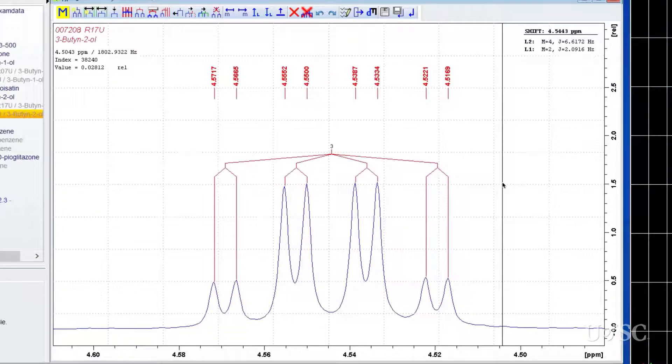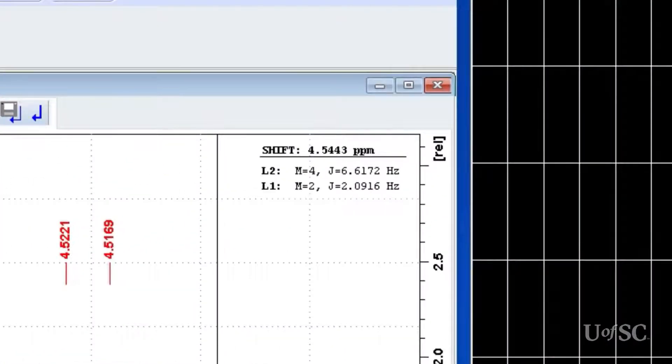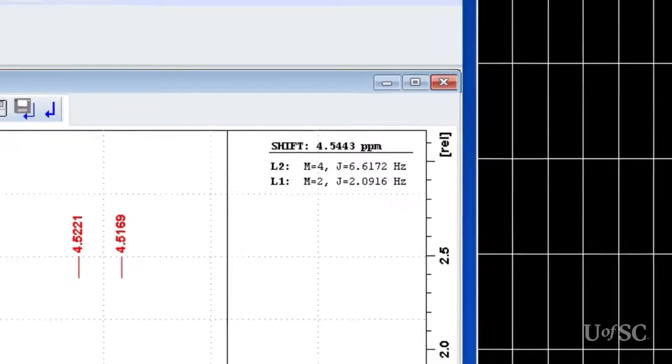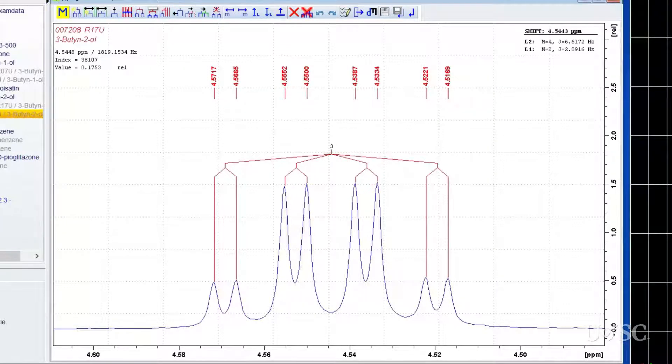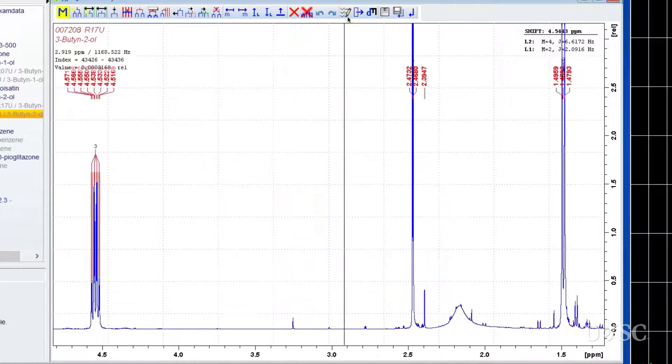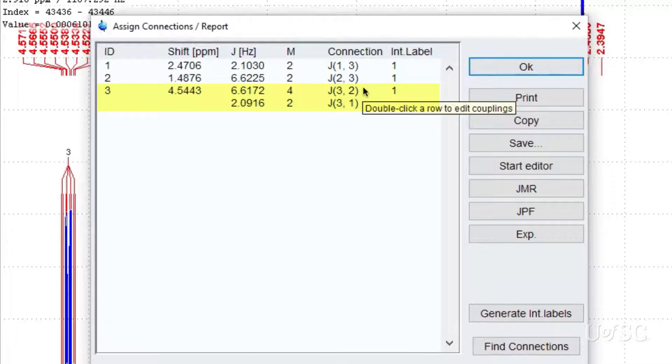The smaller doublets are due to the coupling with the alkyne proton 4 bonds away. Note how the tree has 2 levels that arise from the 2 different coupling constants. The table at the top right also has 2 rows that includes the 2 different submultiplets and the 2 coupling constants. The tree levels will increase for each equivalent coupling in a multiplet. The report for this spectrum will show 3 main rows for the 3 chemical shifts. Note that line number 3 has a 2nd sub-row for the additional coupling.